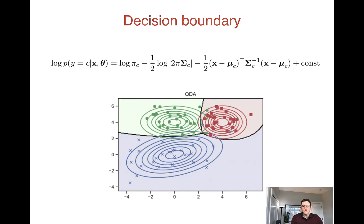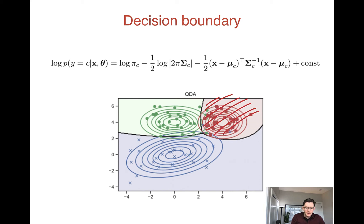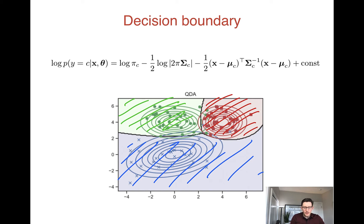The quadratic decision boundaries look like this: a point in feature space is colored red if the posterior probability of the red class is greatest, green if green is greatest, and blue if blue is greatest. Any pair of features falling into a region is classified with that label, and the boundaries between regions are quadratic curves.